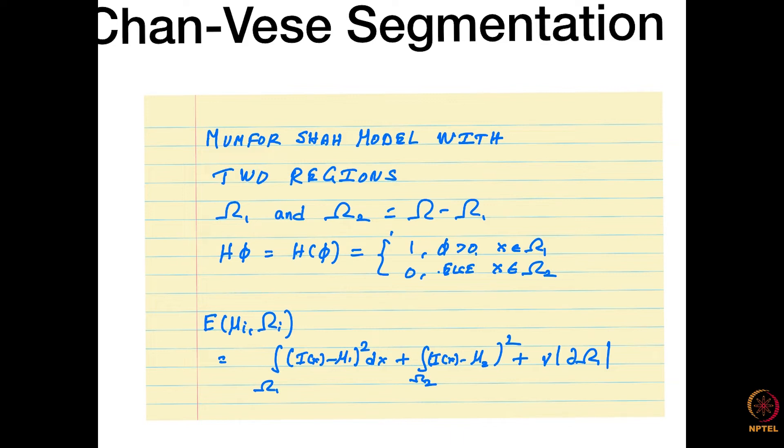We saw this Heaviside function H(phi) is 1 when phi is greater than 0, and 0 otherwise. This means phi greater than 0 means x belongs to one region, and phi less than 0 means x belongs to omega 2. Omega 1 and omega 2 can be thought of as foreground and background. So if you have an object that is the foreground you want to segment, those regions where phi(x) is positive would be the foreground, and in other regions phi(x) would be 0.